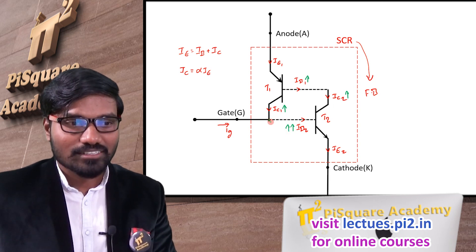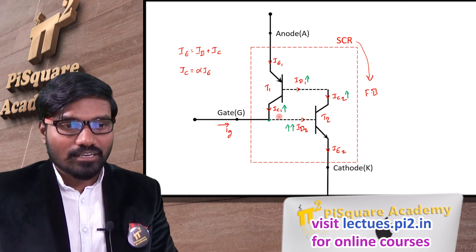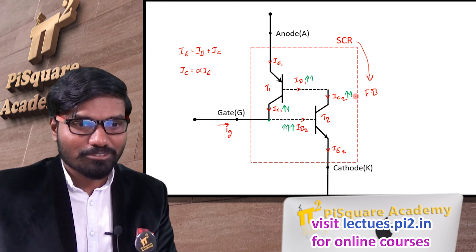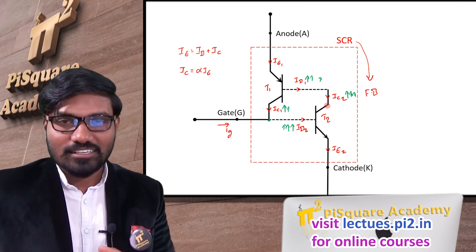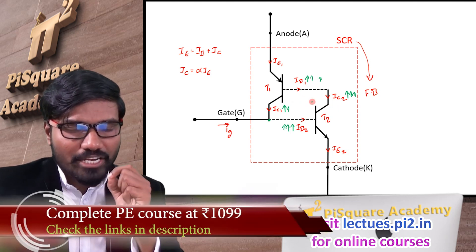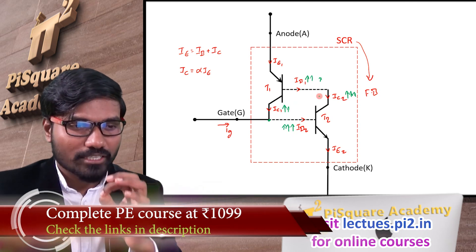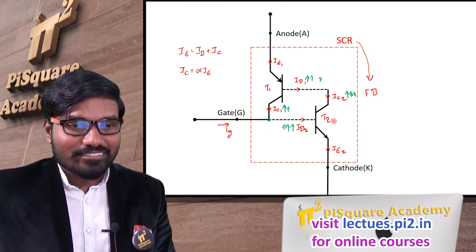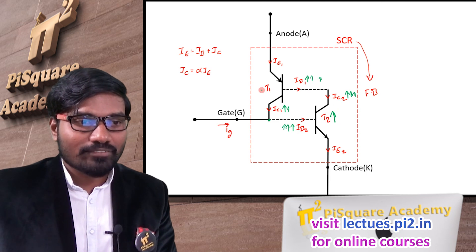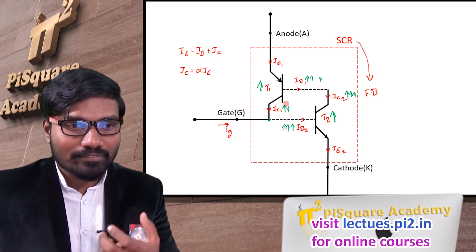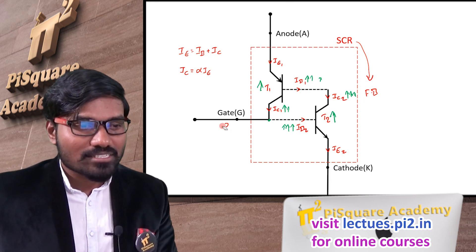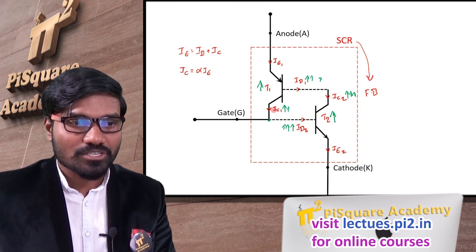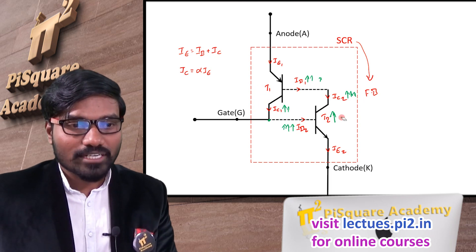This cumulative process happens in a very short time. As currents keep increasing cumulatively, both transistors are driven into saturation. Because this avalanche is happening between the two transistors, even if I remove the gate current, it does not matter — both transistors are driven into saturation regardless.